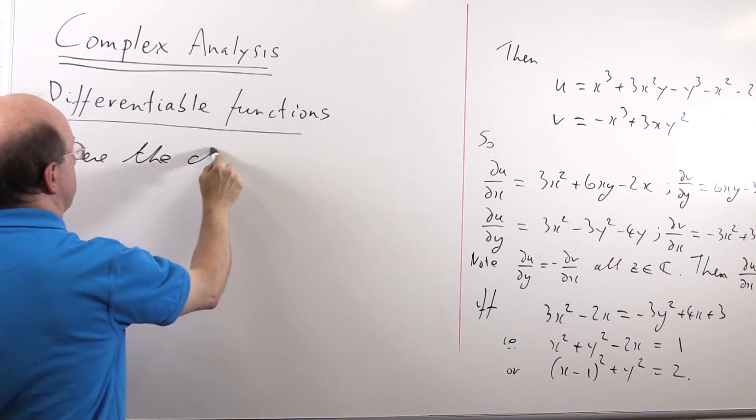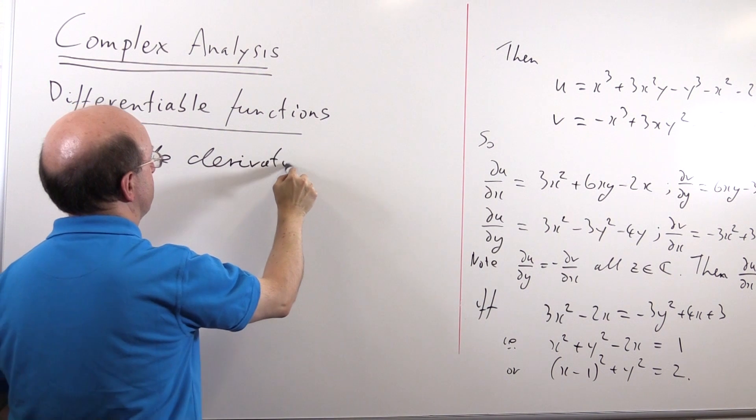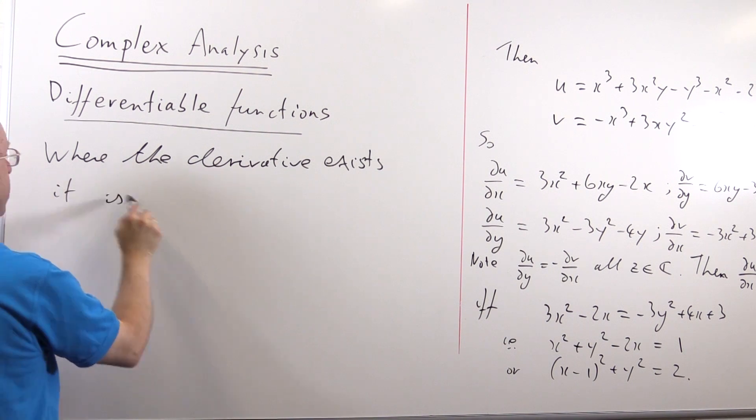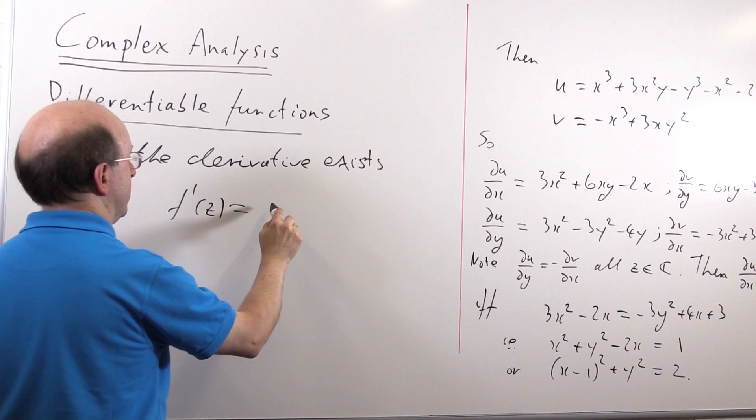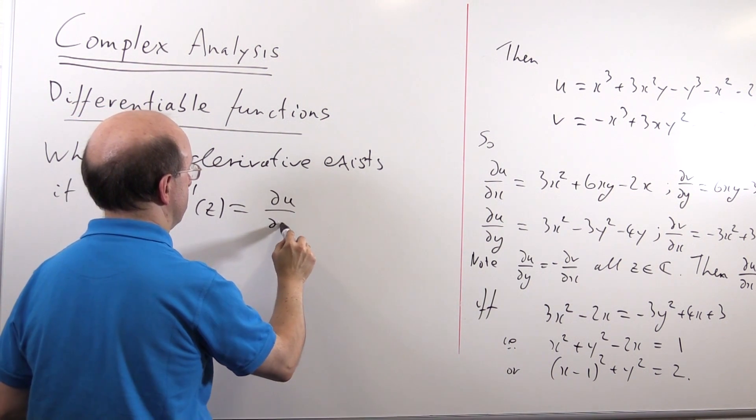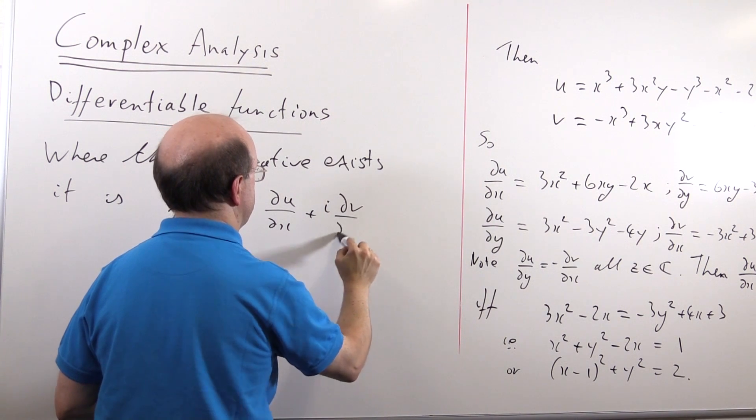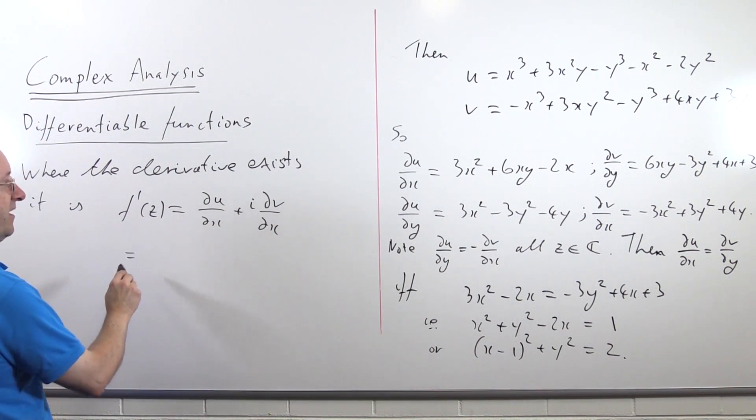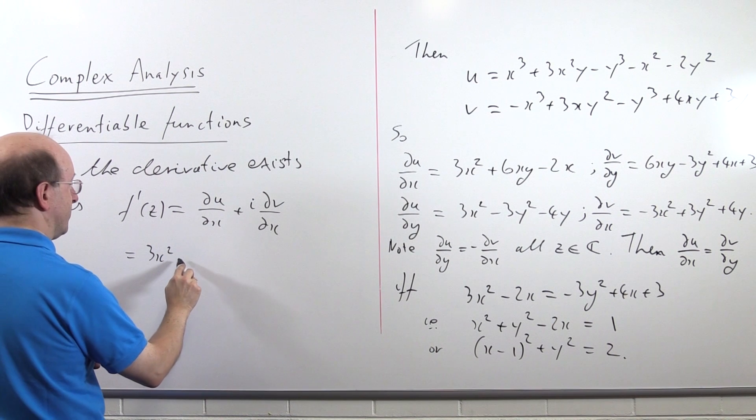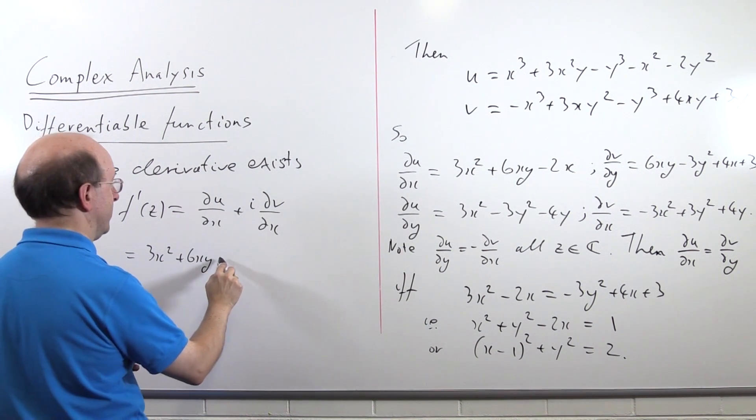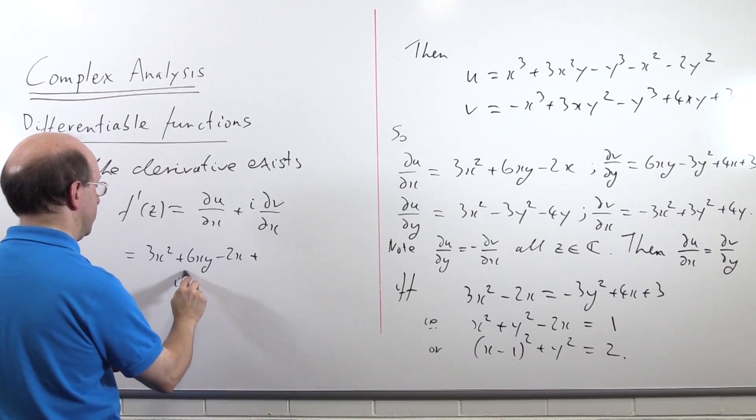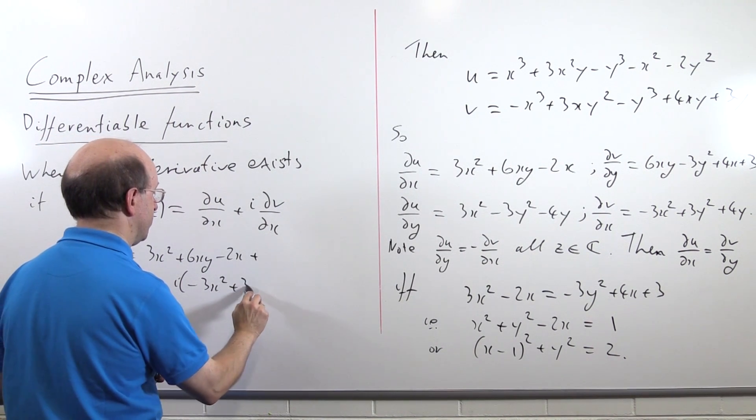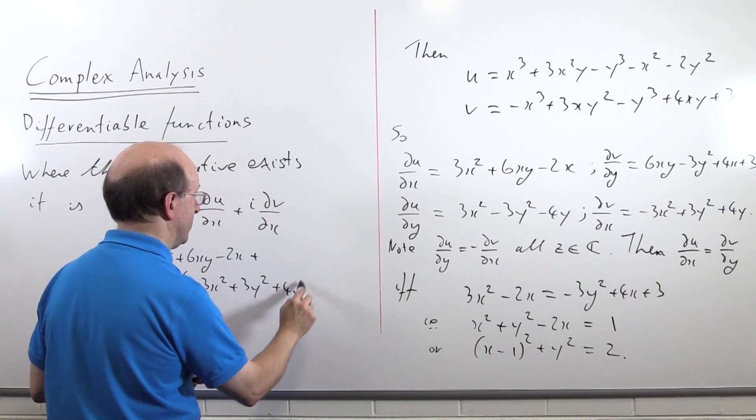Where the derivative exists, it is f dashed of z. We just need to write du dx plus i dv dx, which we've already done all the calculations for. It would be 3x squared plus 6xy minus 2x plus i times minus 3x squared plus 4y.